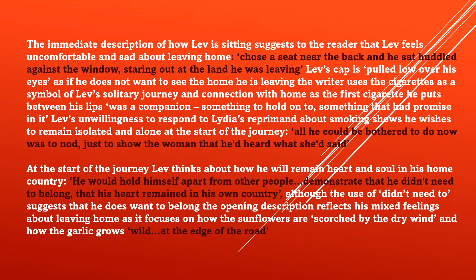The writer uses the cigarettes as a symbol of Lev's solitary journey and connection with home, as 'the first cigarette that he puts between his lips was a companion, something to hold on to, something that had promise in it.' Lev's unwillingness to respond to Lydia's reprimand about smoking shows that he wishes to remain isolated and not disturbed at the start of the journey. I quote: 'All he could be bothered to do now was just to say a little, just to satisfy the woman, just to show that he had heard what she said.'